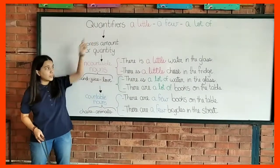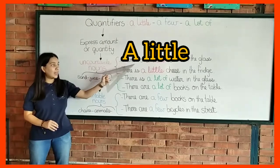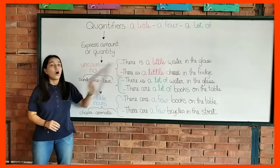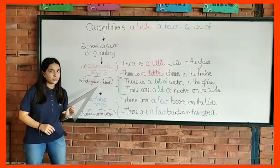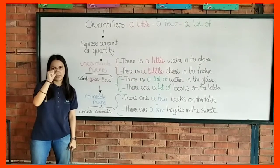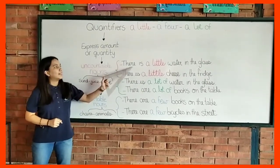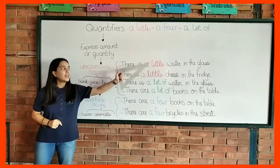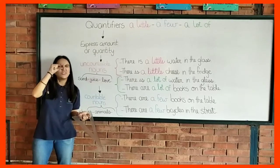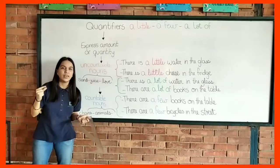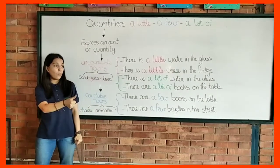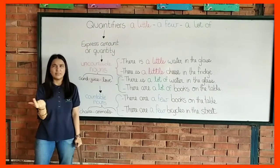Now the quantifiers. We have a little, a lot of, and a few. We use a little only for uncountable nouns, to refer to a small quantity of something. For example, there is a little water in the glass — that means there is just a small amount. We cannot say one water, two waters.